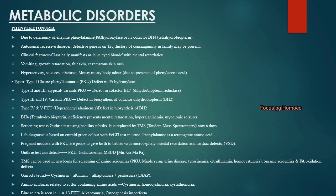Hyperphenylalaninemia is due to defects in biosynthesis of BH2 (dihydrobiopterin). BH4 (tetrahydrobiopterin) deficiency causes mental retardation, hyperphenylalaninemia and myoclonic seizures. The screening test for PKU is the Guthrie test using Bacillus subtilis, now replaced by TMS (tandem mass spectrometry). Lab diagnosis shows emerald green color with ferric chloride in urine. Phenylalanine is a teratogenic amino acid, and pregnant mothers with PKU may give birth to babies with microcephaly, mental retardation and cardiac defects.